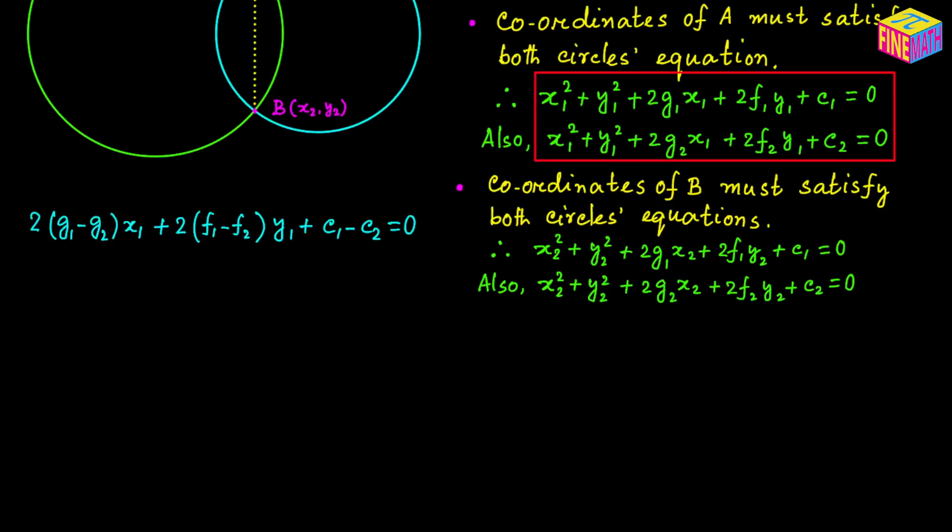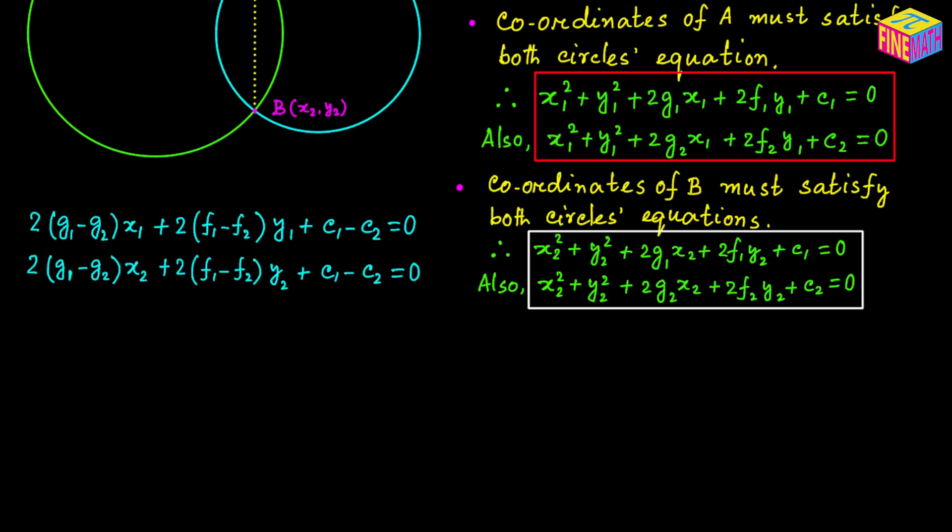Similarly, let's take the other set of equations enclosed in the white box, and again subtract the second equation from the first. The x sub 2 squared and y sub 2 squared terms cancel, and we are left with 2 times (g sub 1 minus g sub 2) times x sub 2 plus 2 times (f sub 1 minus f sub 2) times y sub 2 plus (c sub 1 minus c sub 2) equals 0.